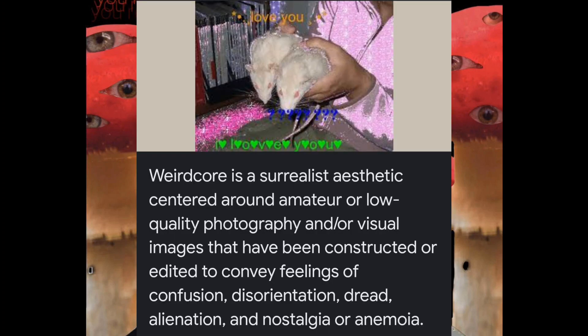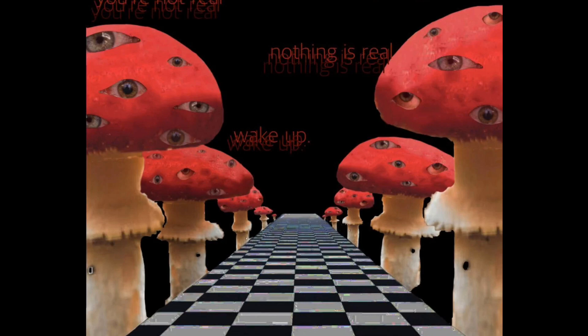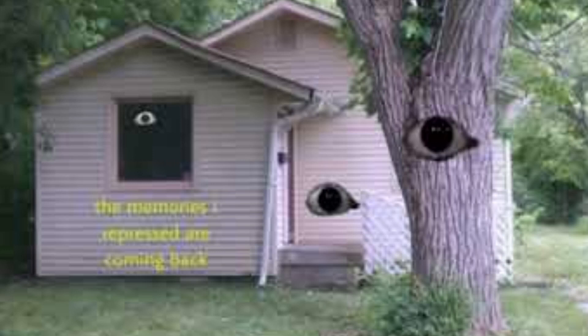Then comes weirdcore. What is weirdcore? Weirdcore is a surrealist aesthetic centered around amateur or low-quality photography and visual images that have been constructed or edited to convey feelings of confusion, disorientation, dread, alienation, and nostalgia. Basically, weirdcore is exactly what the name says — weird. A lot of people enjoy mixing dreamcore and weirdcore together, and that's when you get the creepy stuff, with weirdness mixed with dreamlike pictures. Weirdcore tends to make many people uncomfortable and dissociate because of how eerie and odd the pictures are.